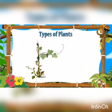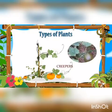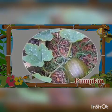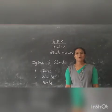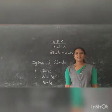Some plants grow along the ground. Such plants are called creepers. For example, pumpkin. Children, I hope all understood this lesson. Thank you.